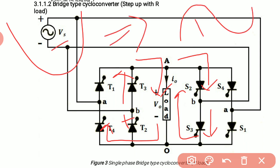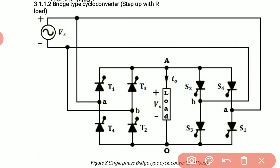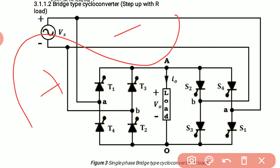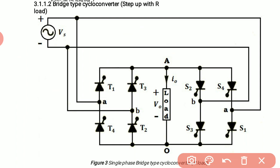So a full negative peak is also broken down into sub-cycles. We are actually converting a full AC cycle into a number of sub-cycles. We can convert a full AC cycle into four, six, or eight sub-cycles depending on our need. This full cycle can be broken down into any number of sub-cycles, which is controlled by the turn-on and turn-off time of these thyristors.